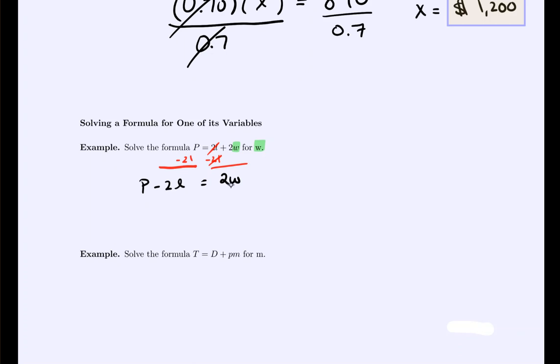Now we want to get W by itself, but it's currently being multiplied by 2. So if we divide both sides by 2, then we would get W is equal to P minus 2L, all divided by 2. And in this case, we've maneuvered the equation to where it's still equivalent in value to the beginning, but W is now isolated.